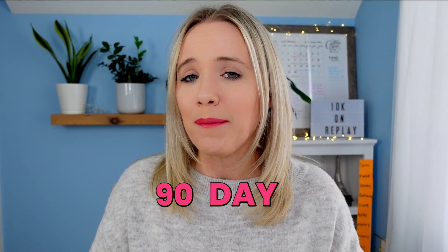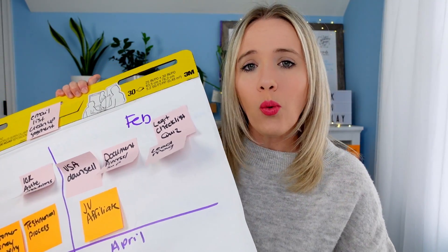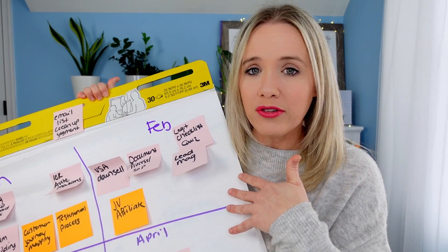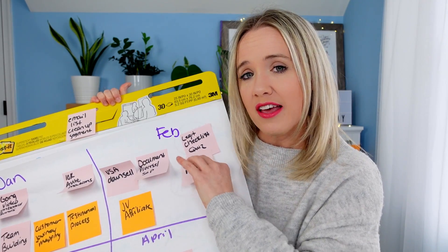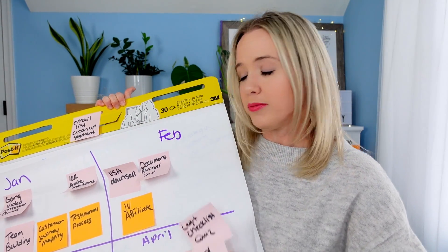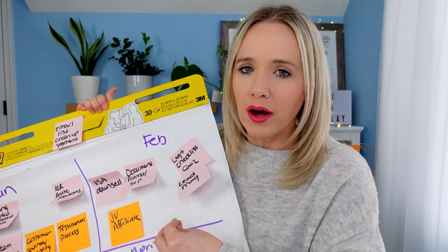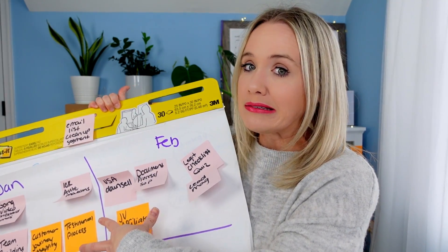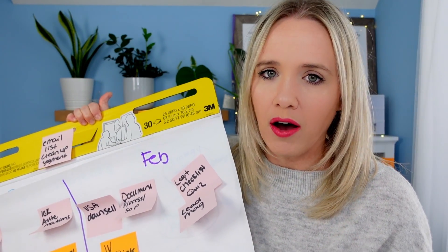I have an entire 90-day planning system. If you would like me to share that process with you, put in the comments below "90-day video." In that process is how I break down what exact projects I'm going to be working on and when. I start out with a Post-it like this so I can easily see: does this project fit in this month, or do I have too many projects and need to move things? Understanding how many projects I have each month lets me know if my plan is realistic.